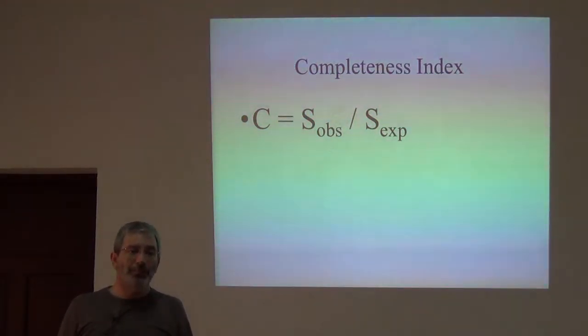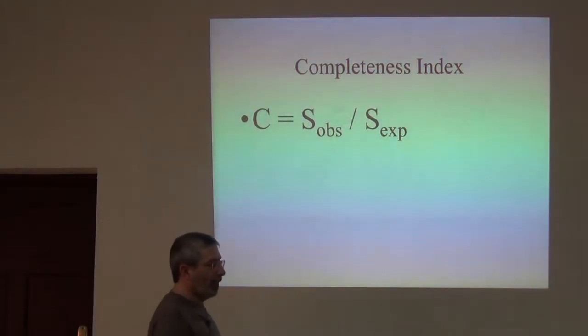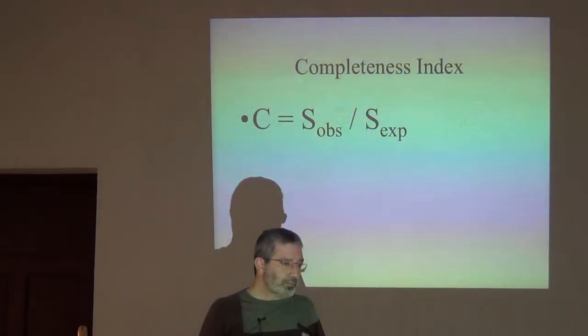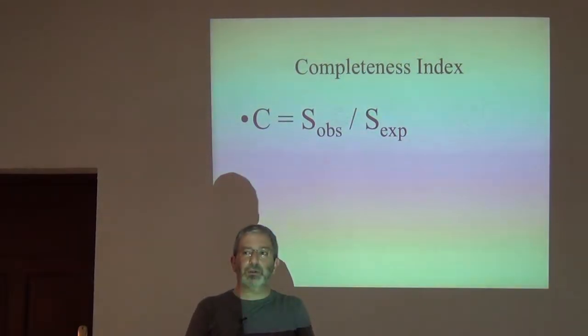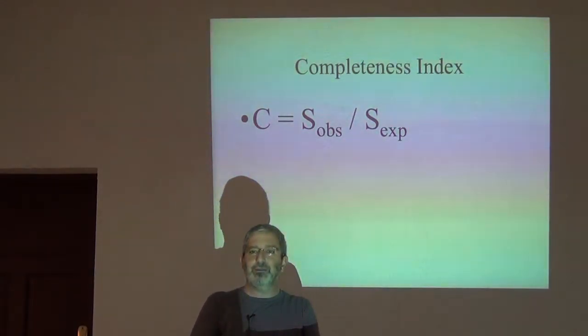Now you are equipped with a set of tools to be able to think about how can I measure the completeness of my inventory quantitatively. I've just illustrated for you that you can have the exact same species accumulation curve and yet have different levels of completeness in your inventory.